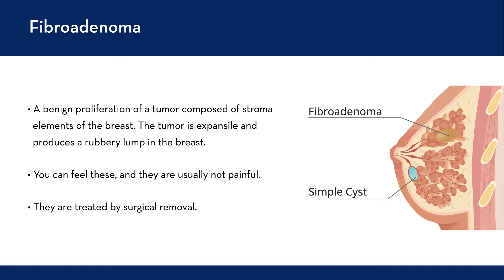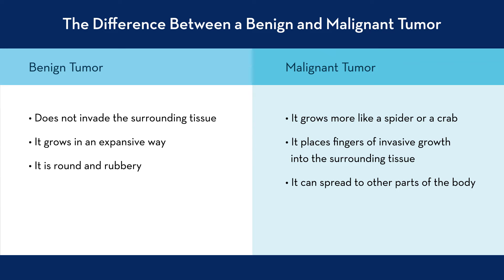The difference between a benign tumor and a malignant tumor is that a benign tumor does not invade the surrounding tissue — it grows in an expansile way and is very round and rubbery. A malignant tumor will grow more like a spider or crab, placing fingers of invasive growth into the surrounding tissue, and can also spread to other parts of the body. A benign tumor very rarely converts into a malignant tumor. There are some unusual fibroadenomas that can become extremely large and sometimes undergo malignant conversion — these are called phyllodes tumors and they're extremely rare.